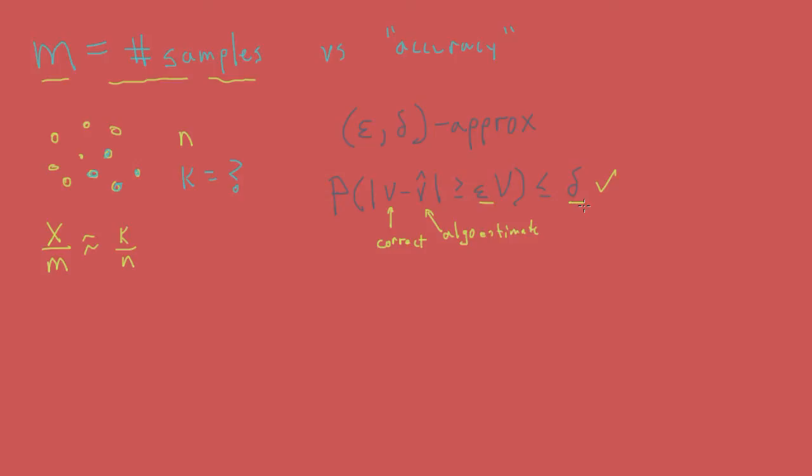For the sampling problem we just discussed, we now want to derive how m, the number of samples necessary, depends on n and k, and also epsilon and delta.